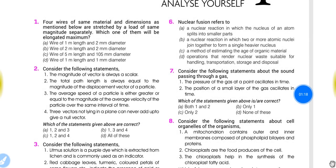Question number 2: Consider the following statements. The magnitude of a vector is always a scalar. The total path length is always equal to the magnitude of the displacement vector of a particle. The average speed of a particle is either greater or equal to the magnitude of the average velocity of the particle over the same interval of time. Three vectors not lying in a plane can never add up to give a null vector. The correct option to this question is option B: statements 1, 3, and 4 are correct.